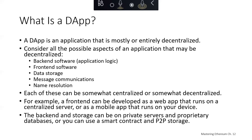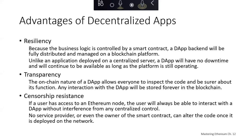There are definite advantages to creating a dApp that a typical centralized architecture cannot provide. One of the most important benefits is resiliency: because the business logic is controlled by a smart contract, a dApp's backend can be fully distributed on the blockchain, and will not have downtime as long as the blockchain platform is operating. From a transparency perspective, the on-chain nature of a dApp allows everyone to inspect the code, and any interaction with a dApp will be stored forever on the blockchain. From a censorship resistance perspective, as long as a user has access to an Ethereum node, they will always be able to interact with a dApp without interference. No service provider, even the owner of the smart contract, can alter the code once it's deployed on the network.